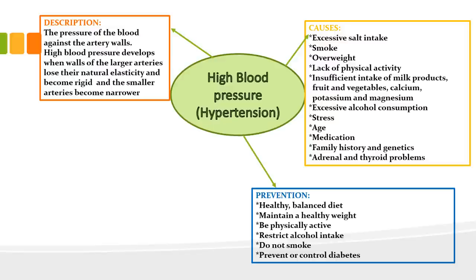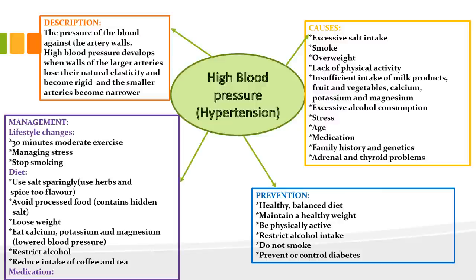Prevention of high blood pressure includes a healthy, balanced diet, maintaining a healthy weight, being physically active with about 30 minutes of exercise per day, restricting alcohol, not smoking, and preventing or controlling diabetes. Management is broken into lifestyle changes — 30 minutes of moderate exercise daily, managing stress, stopping smoking — dietary changes, and medication as a last resort. Prevention and management overlap quite a lot.